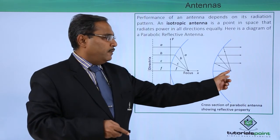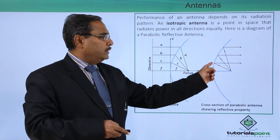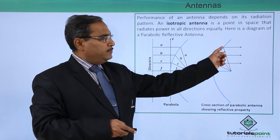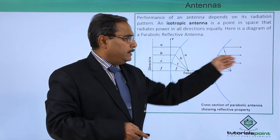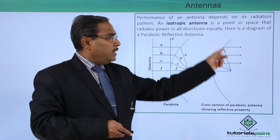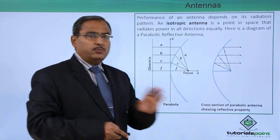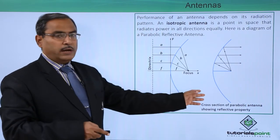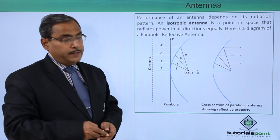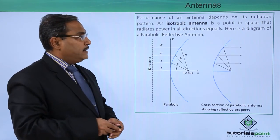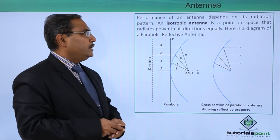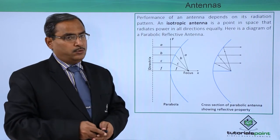From this particular focus, all the radiations which will be emerging, after reflection, will be going in this particular fashion. That is known as the parabolic antenna. We have taken only one cross section for your understanding. Performance of an antenna depends on its radiation pattern. An isotropic antenna is a point in space that radiates power in all directions equally.